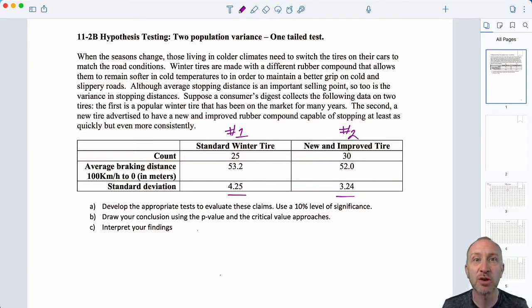Okay, let's get into the problem. When seasons change, those living in colder climates need to switch tires on their cars to match the road condition. So, we have winter tires and we have summer tires. Winter tires are made with a different rubber compound that allows them to remain softer and colder temperature and to maintain better grip on cold and slippery roads.